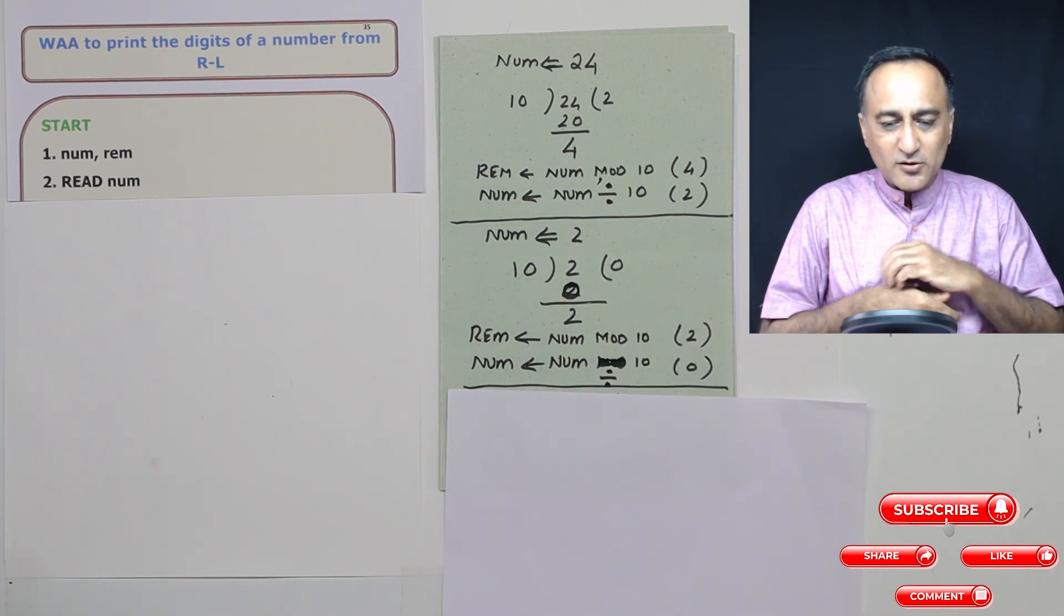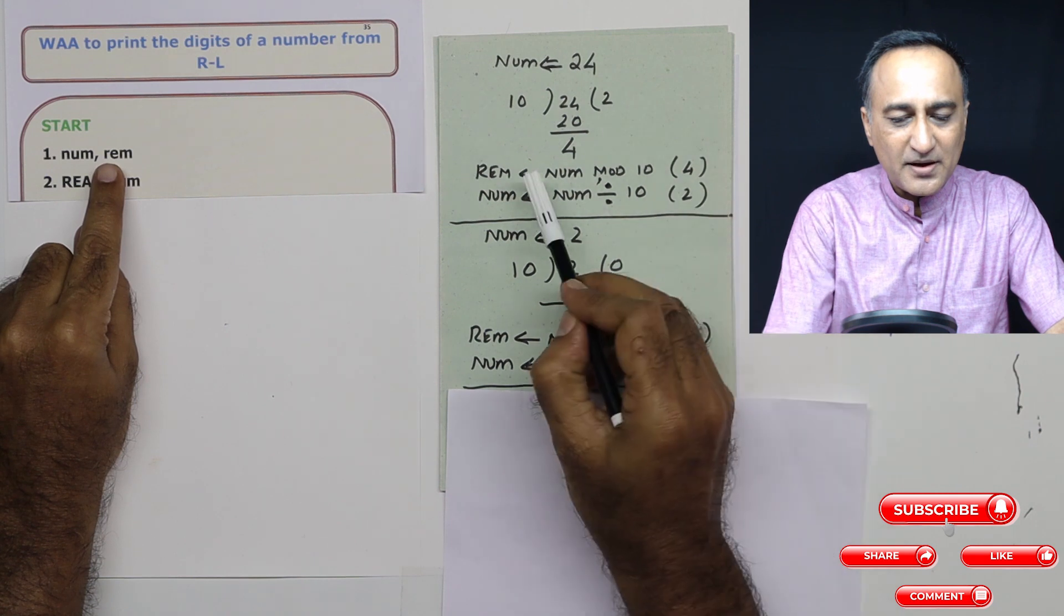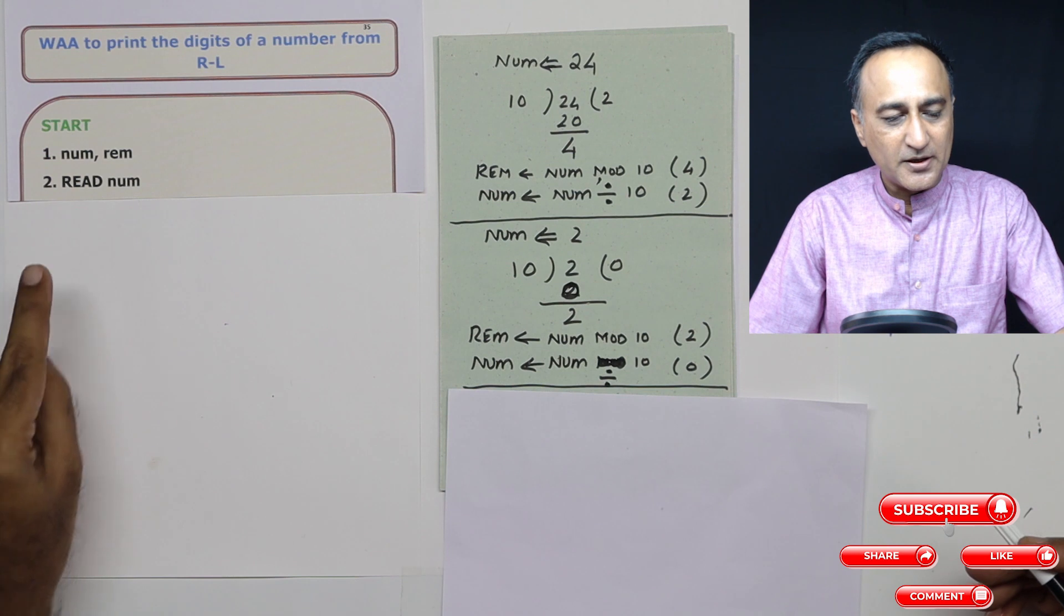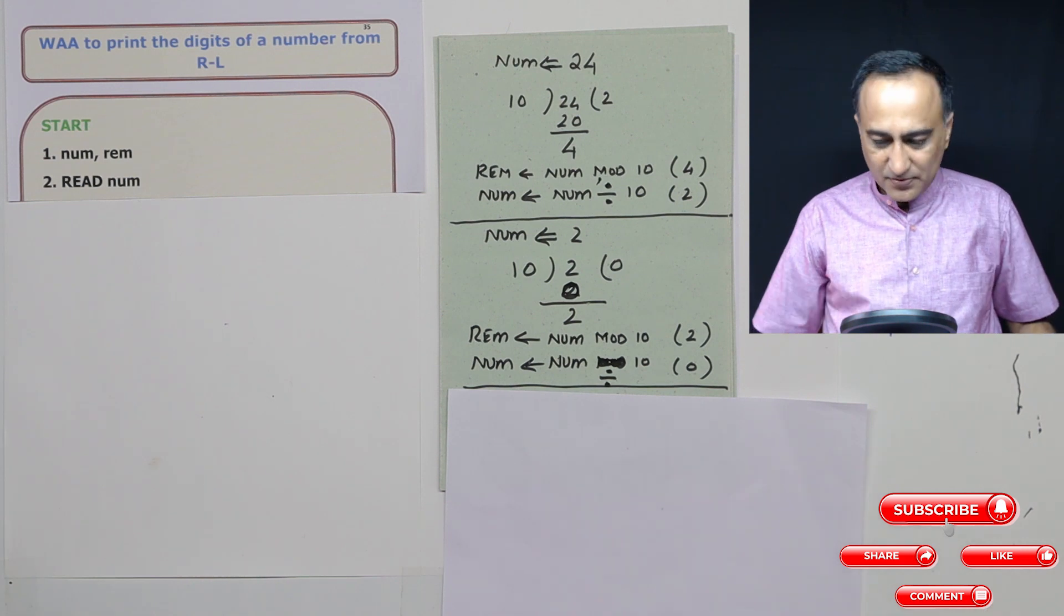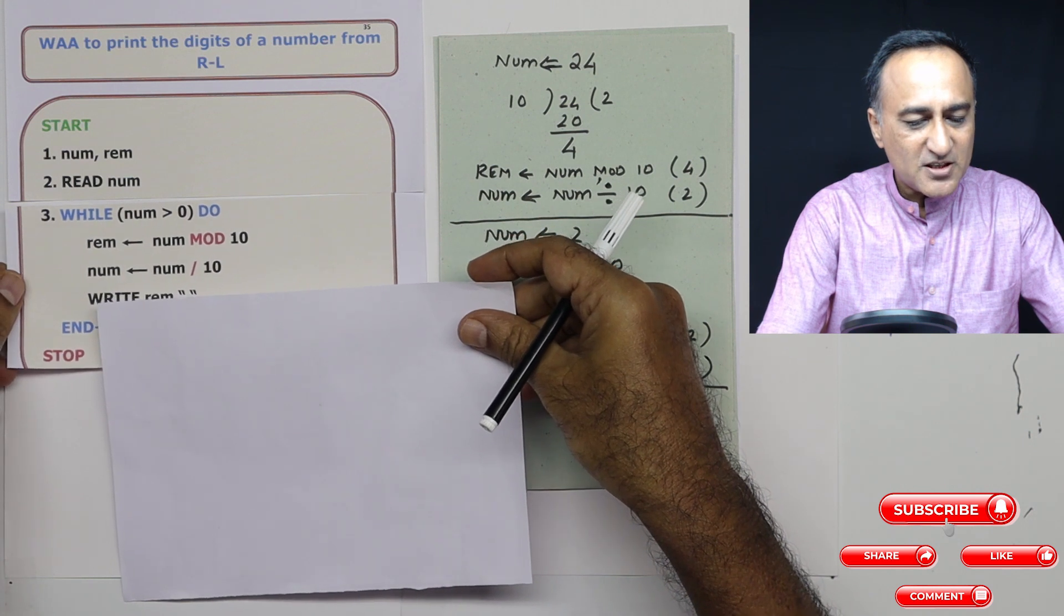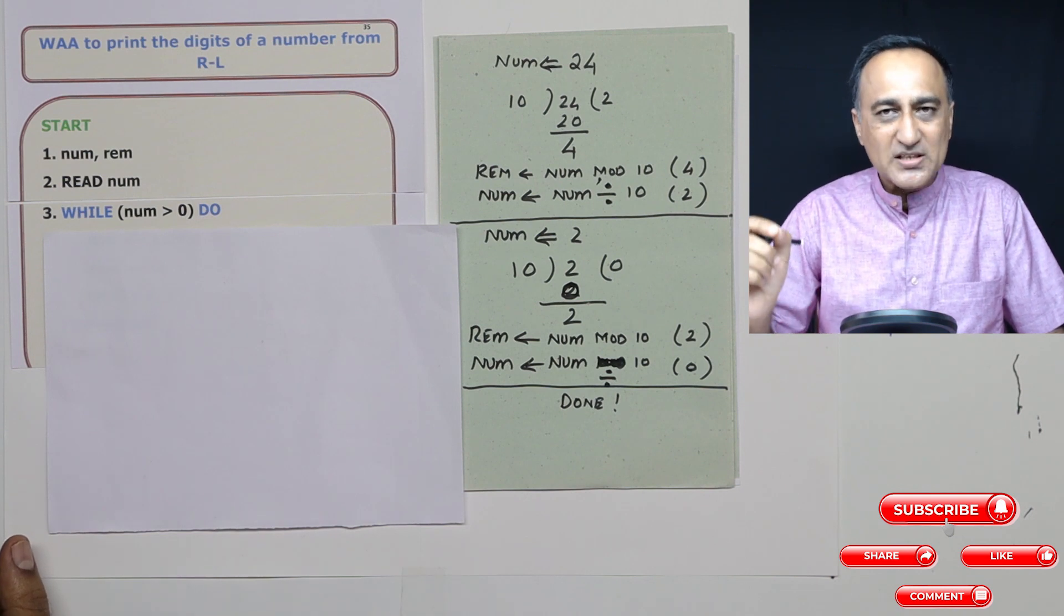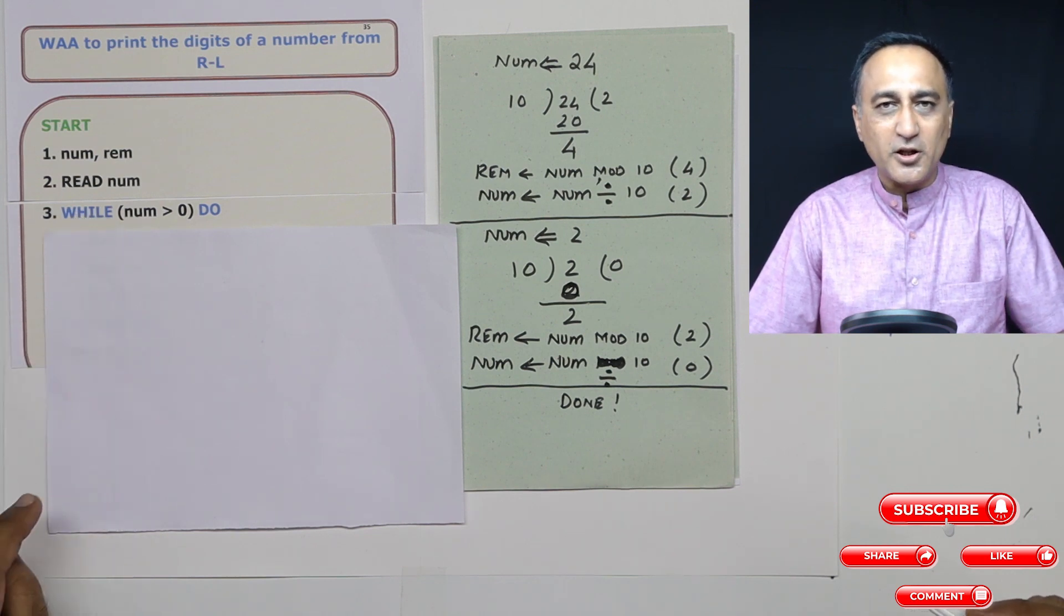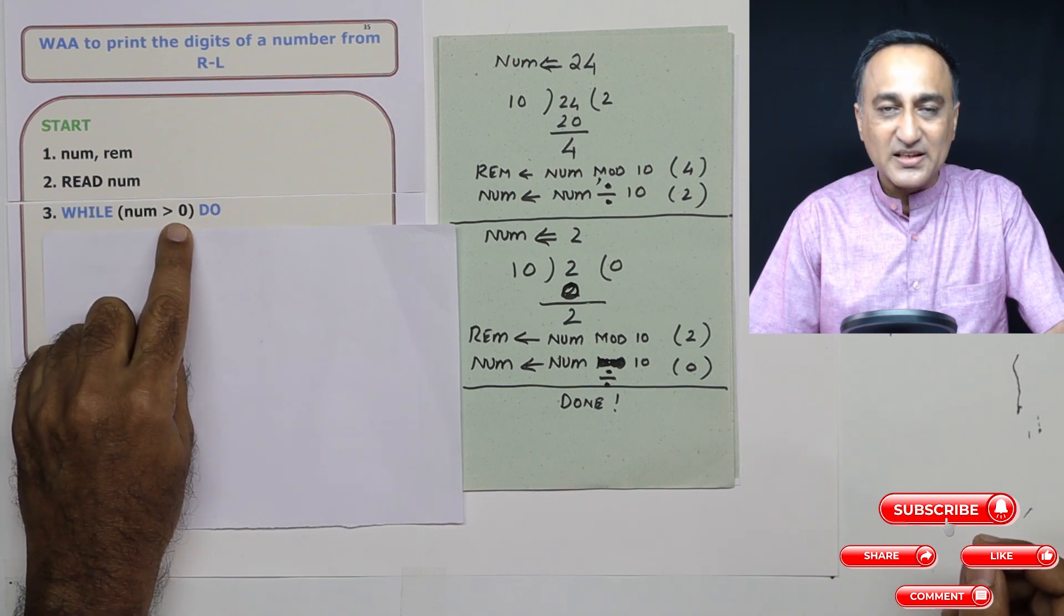So my condition will be while number greater than 0, first do remainder is number mod 10, next step is number is number divided by 10, print remainder and keep looping as long as the value of number is greater than 0. So let's try to now run through the logic. I need one variable called number to read a number like 24, I need remainder to keep the remainder of a number and also to print it out. First thing I do is ask the user to enter a number. Once the user enters the number from the keyboard, the very first thing in a loop, you should first always ask yourself a question: How many times should I keep repeating the logic in the loop? That is your condition of the loop. I should keep doing it as long as number is greater than 0.